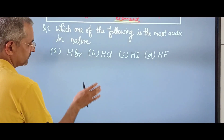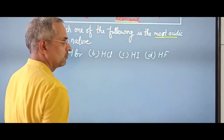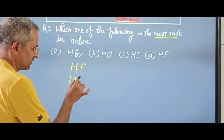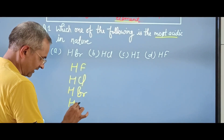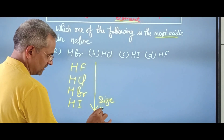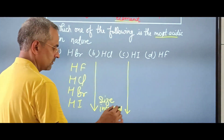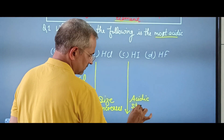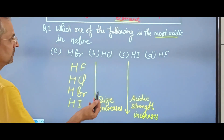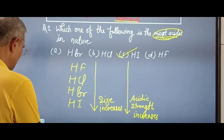Question: which of the following is the most acidic — HF, HCl, HBr, or HI? As we go down the group, size increases. As size increases, acidic strength increases. Therefore, HI is the most acidic in nature among HF, HCl, HBr, and HI.